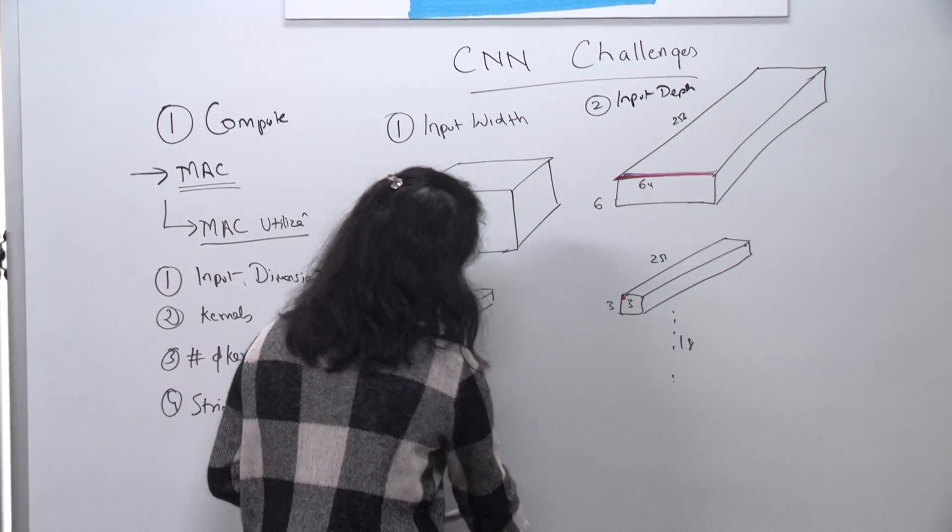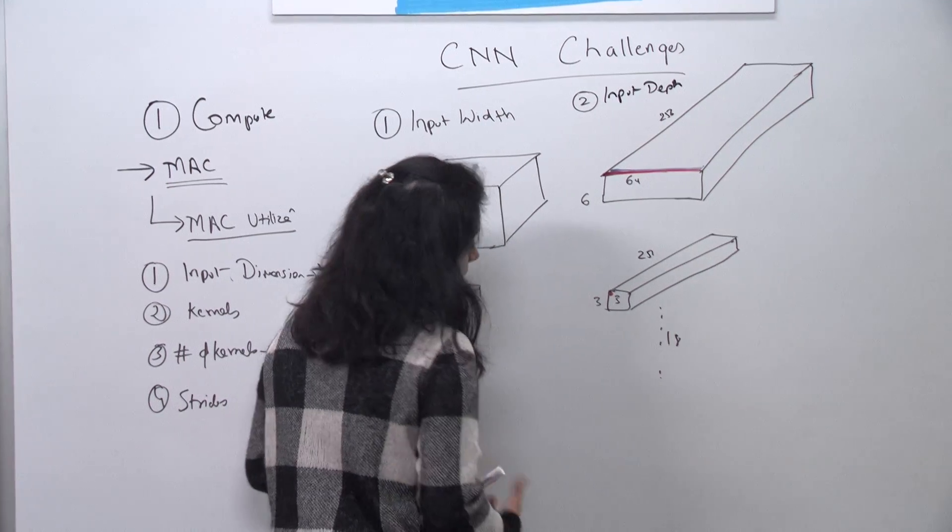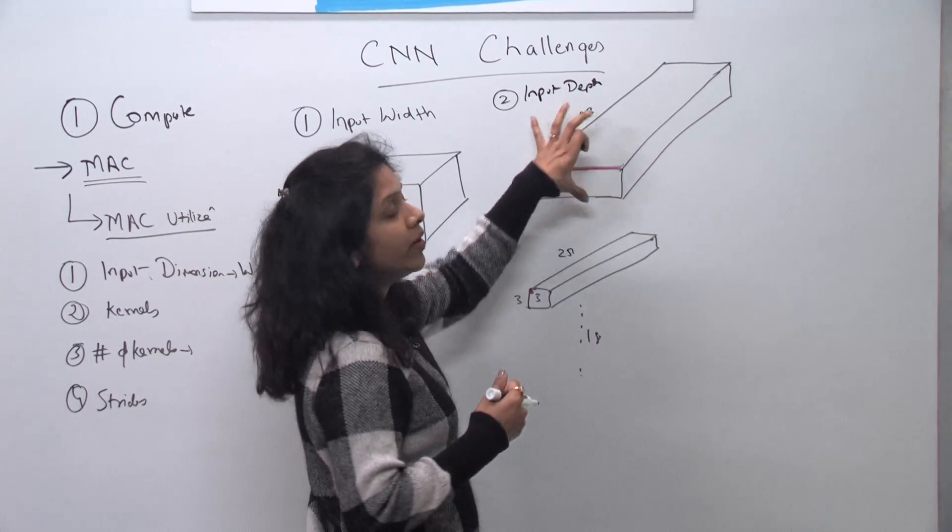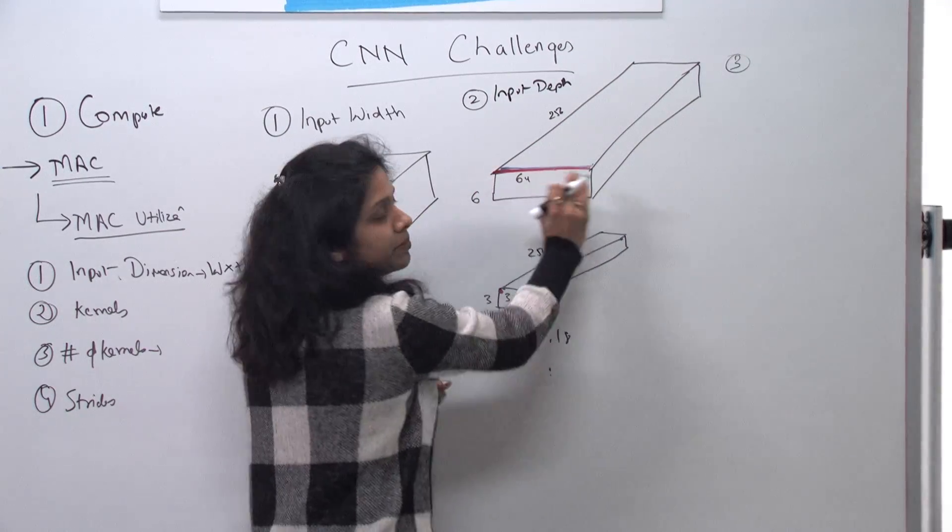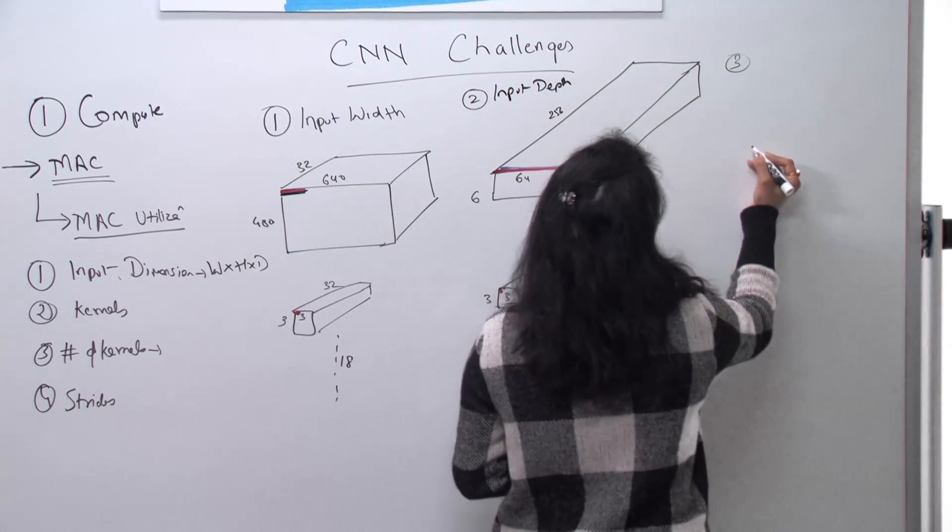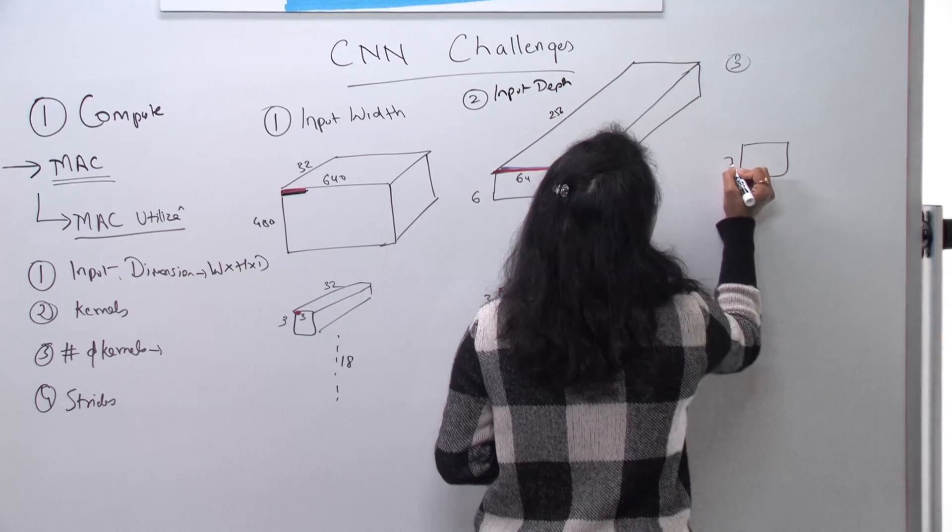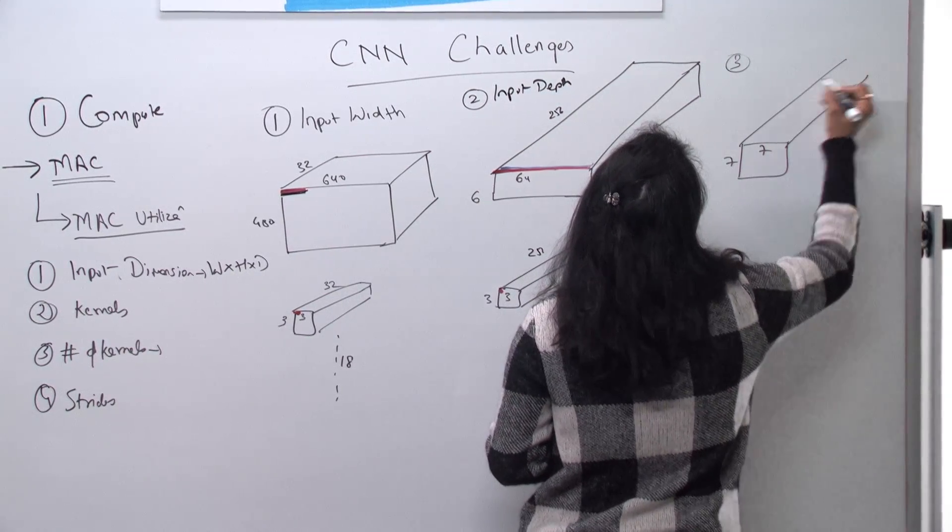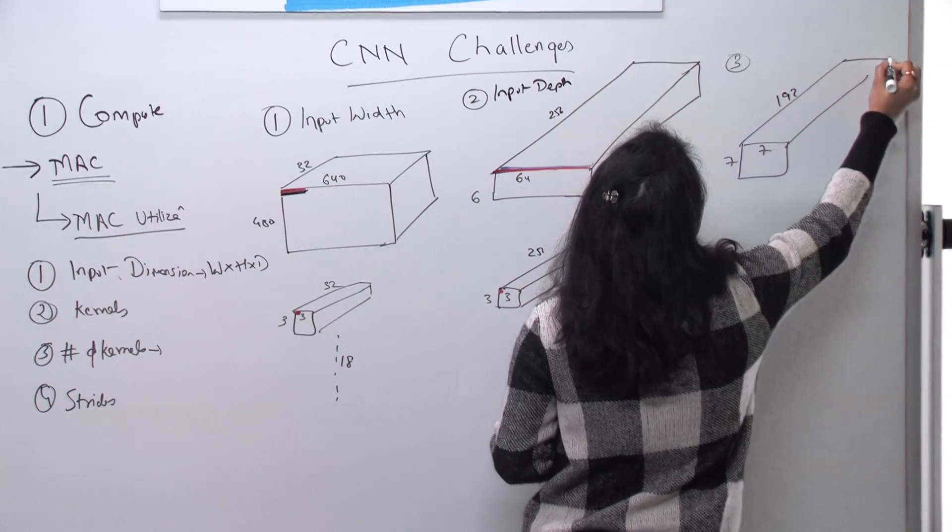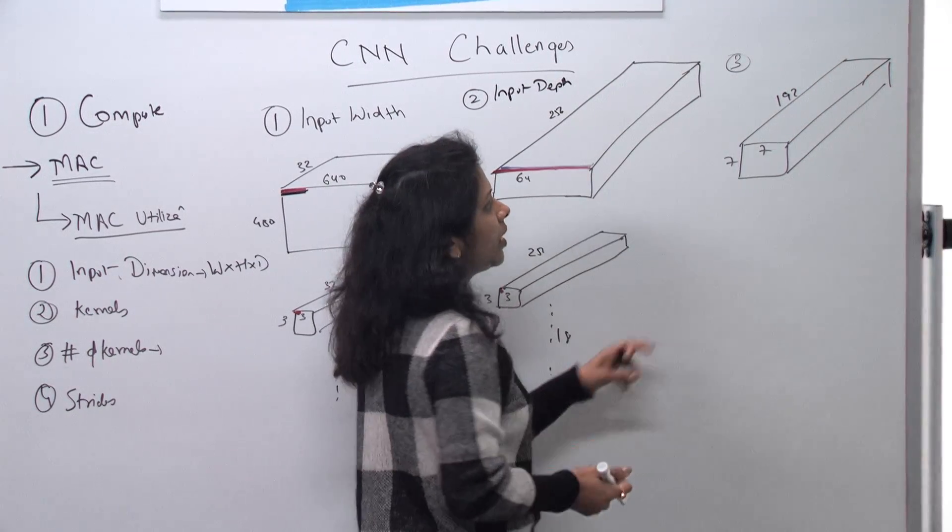Now, a third case which I would like to highlight is, let's say I have a very small of those now. So I was still very well in my SIMD width. But I have a case where I have 7 by 7. My depth is long. Let's say I have a 192 depth. But in this case, my spatial dimension is so small that I cannot fit it along my SIMD width.